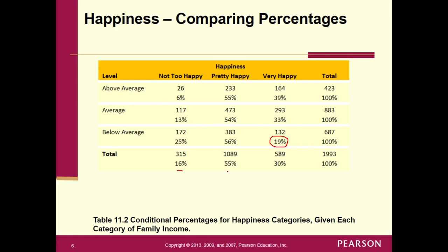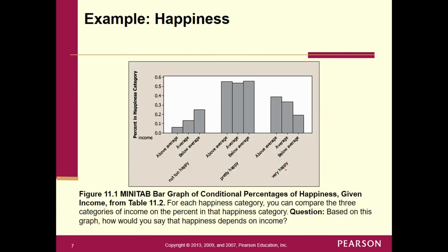Notice that the totals turn out to be 16%, 55%, and 30%. Hopefully that all sounds familiar. If we take a look at a graph — and the graph tells us a lot — this is why in projects we have you look at two categorical variables with a graph. We made a graph with not too happy, pretty happy, and very happy. And for each happiness level, we have the families that were above average, average, and below average income. Do you think there's a significant difference between these groups?